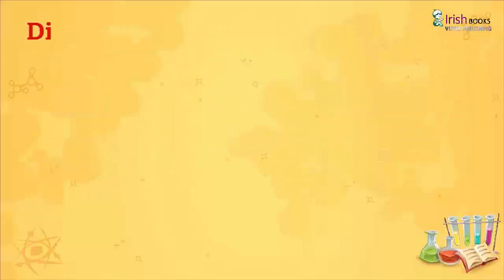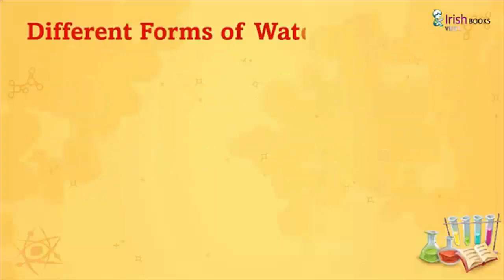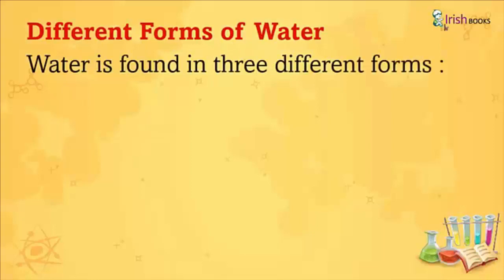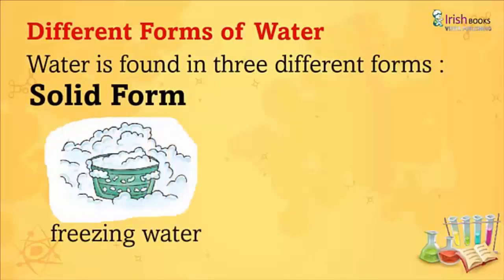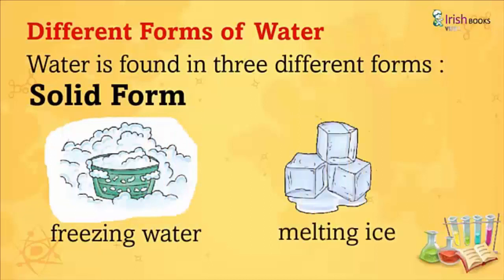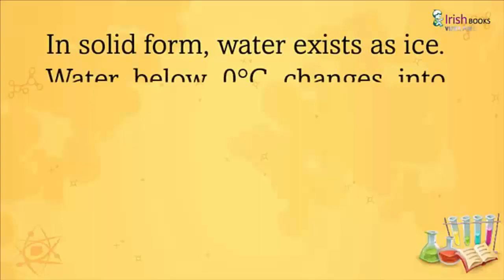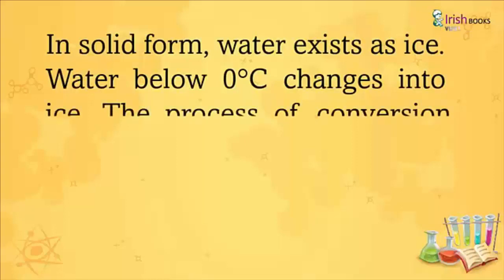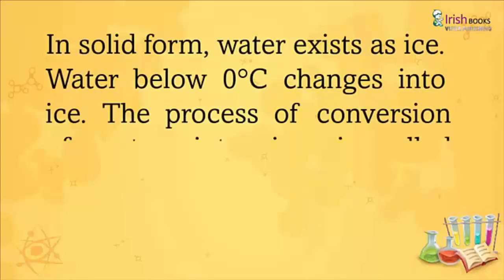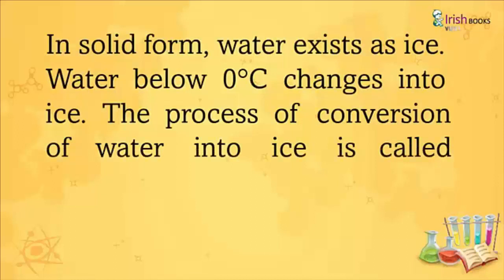Water is found in three different forms. In solid form, water exists as ice. Water below 0 degrees Celsius changes into ice. The process of conversion of water into ice is called freezing.